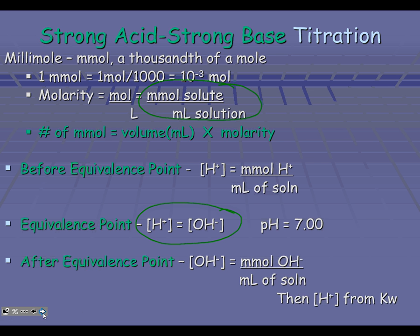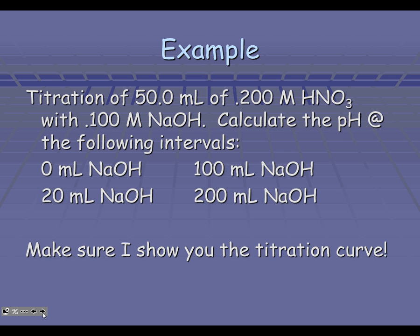Let's look at a problem. We have the titration of 50 milliliters of 0.2 molar nitric acid with 0.1 molar sodium hydroxide. We want to calculate the pH at these different intervals: before we've added any sodium hydroxide in, when we've added 20 milliliters, 100 milliliters, and 200 milliliters.